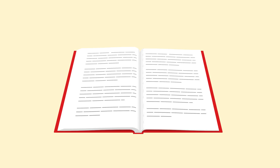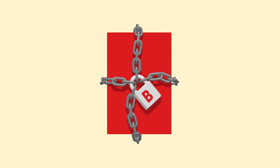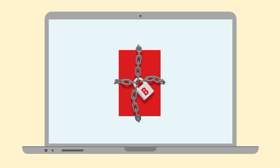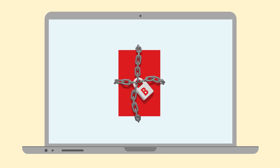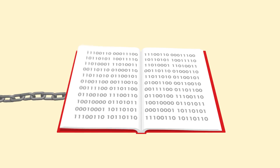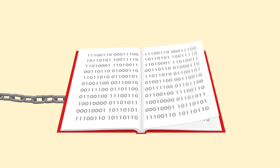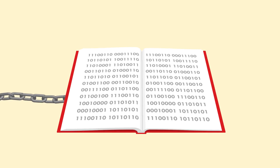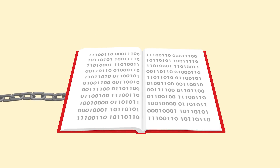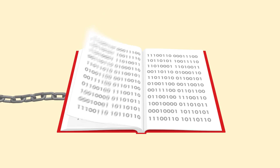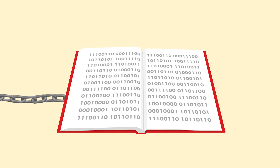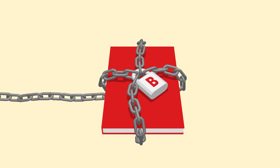So what if we get rid of the middlemen and automate the transactions instead? Enter blockchain. Blockchain is a huge ledger of transactions made out of computer code that's stored online. Just like those held by middlemen, the blockchain ledger can hold a record of different transactions as well.